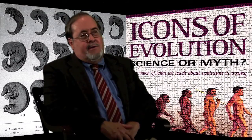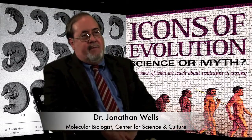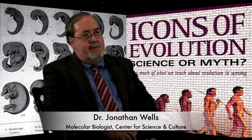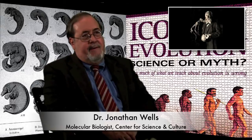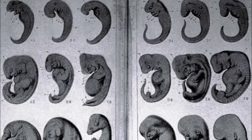Another icon I wrote about was a set of drawings made by 19th century German Darwinist Ernst Haeckel of vertebrate embryos. Darwin knew that the fossil evidence was not particularly helpful to his theory, so in Darwin's own opinion, the best evidence for his theory was what we see in embryos. He believed and wrote in The Origin of Species that embryos in the same class or group are most similar in their early stages and become different only as they develop.